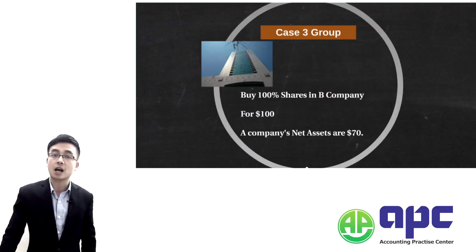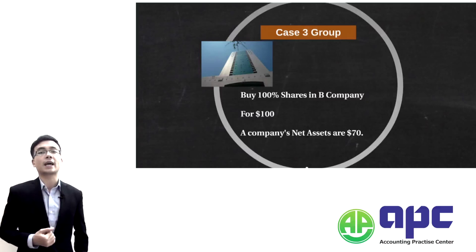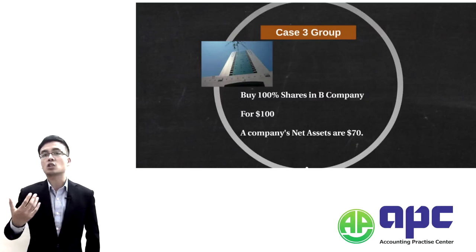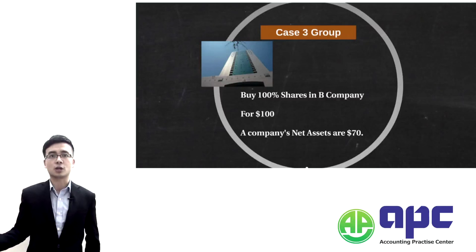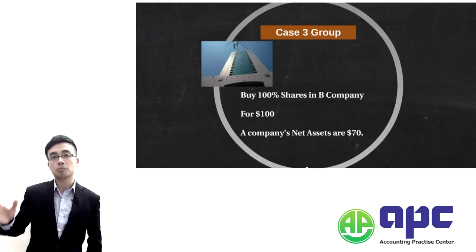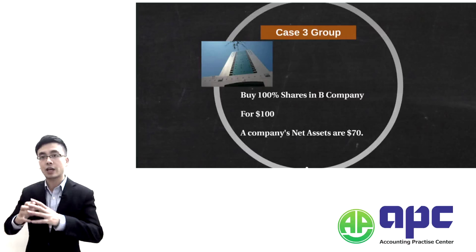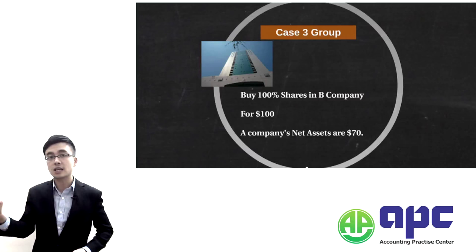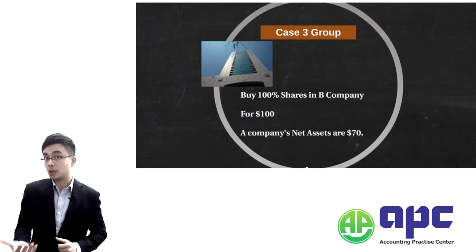In this example, our company buys 100% of shares in Company B. Within Company B's accounts, it has 1,000 shares — if we buy 100% that means we buy all 1,000 shares. We spend $100 to buy it, and their net asset — total assets minus liabilities — is $70. So that becomes the equity.